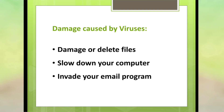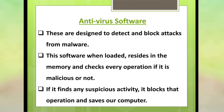To protect our system from these viruses, we have antivirus software. These antivirus softwares are designed to detect and block attacks from malware. When loaded, this software resides in the memory and checks every operation to determine if it is malicious or not. For example, whenever you put in a pen drive, an antivirus program automatically starts and checks whether there is any virus or malware present on the pen drive. If found, it generates a caution message indicating that the file contains malicious data.